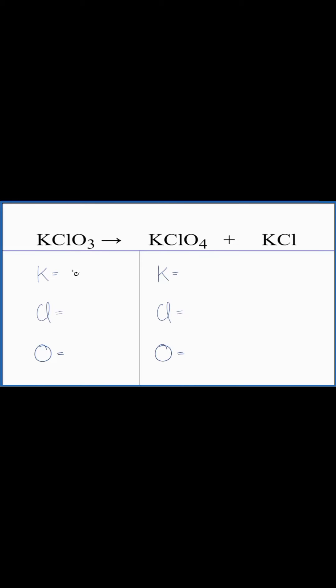Let's count the atoms up and balance the equation. One potassium, one chlorine, and three oxygen atoms. Product side, one potassium. Don't forget this here. It's another one. That gives us two potassiums. We have one chlorine plus the one chlorine here gives us two and then four oxygens.